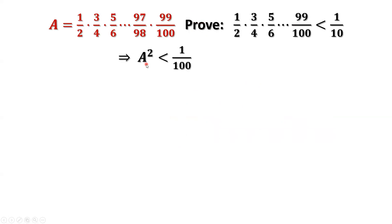Therefore, A squared is less than 1 over 100. The question is to prove that A is less than 1 over 10. Taking square roots on both sides of this inequality, we have A is less than square root of 1 over 100, which is 1 over 10. We have done this proof.